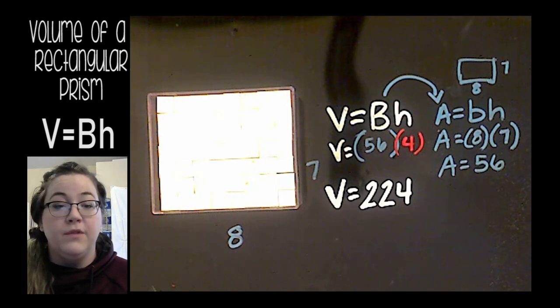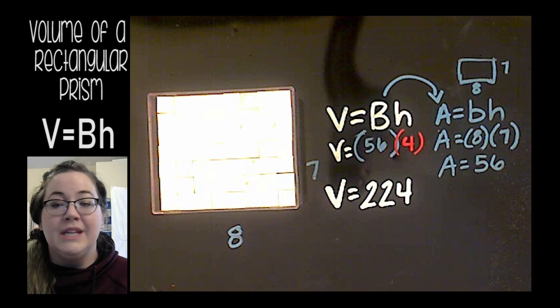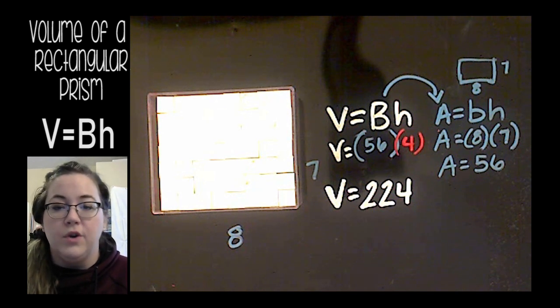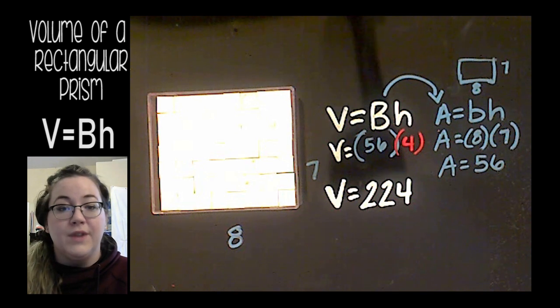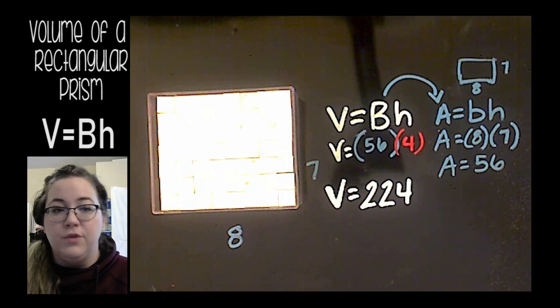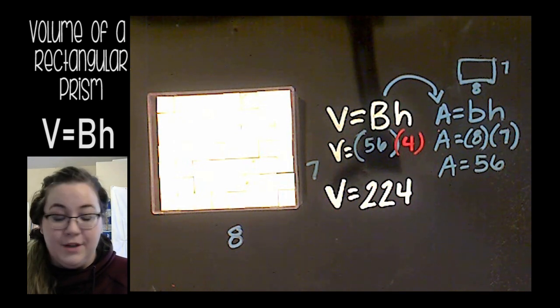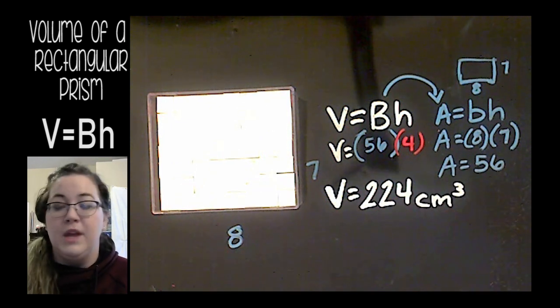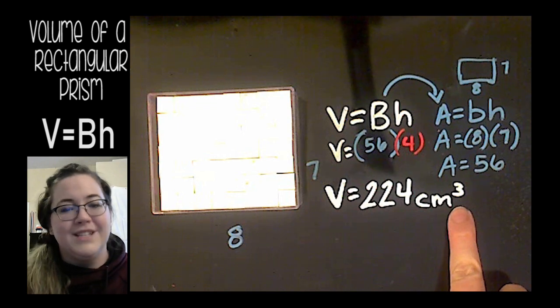So the volume of this rectangular prism is 56 times 4. 56 times 4 is 224. So the volume of this rectangular prism is 224 cubic centimeters. Notice how it's a cube because it's a 3D shape.